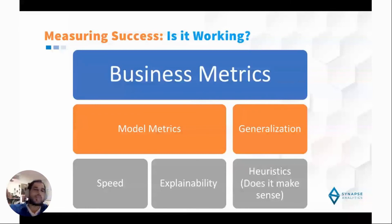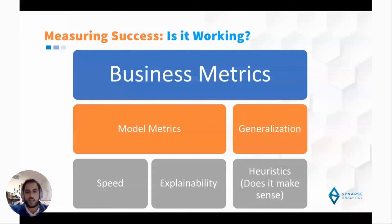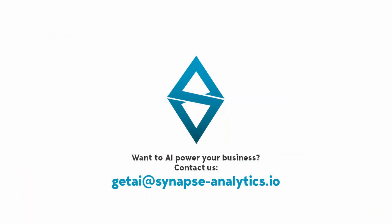Heuristics is about whether the model makes sense. For example, if a model for an online ordering app says that if a store has a TV, customers will be more likely to order from it — that can be a very accurate model, but it doesn't make sense, because having a TV has nothing to do with ordering online. So heuristics and domain expertise are extremely important when deploying an AI model.